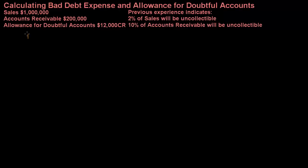We previously discussed bad debt and we said that there were two different methods to calculate bad debt. There's direct write-off, and there's the allowance method. Under the allowance method we create a holding account that has some of our bad debt in it, so that way when we know which accounts receivables go bad we can use up that allowance.